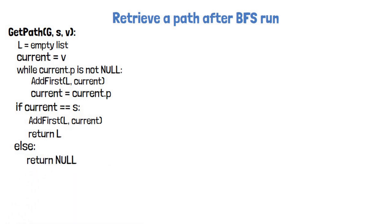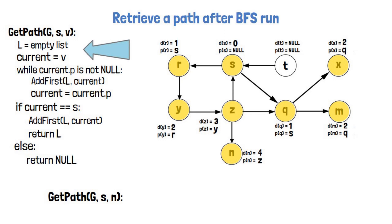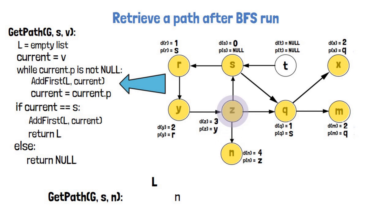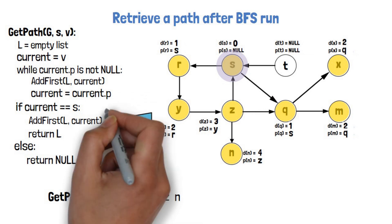Let's see an example to make it more clear. Here is our BFS run result on the graph from before. Say we want to find the path between S and N. We start by creating the empty list and setting current to N. N has a parent, so we add N to the list and set current to its parent Z. Z also has a parent, so we add Z and set current to its parent Y. Similarly, Y's parent is R, so we add Y and update current to R. R also has a parent, so we add R and update current to its parent S. S's parent is null, so we exit the while. We ended up with S, so we add it and return the path.